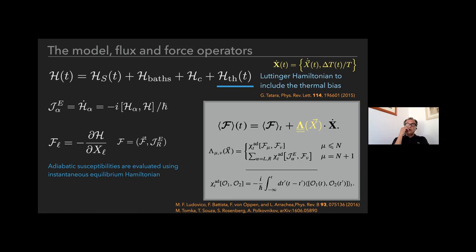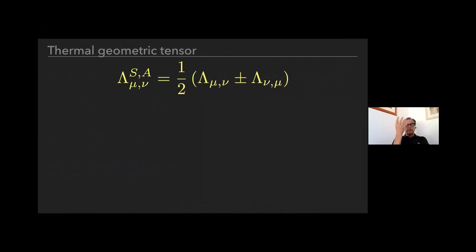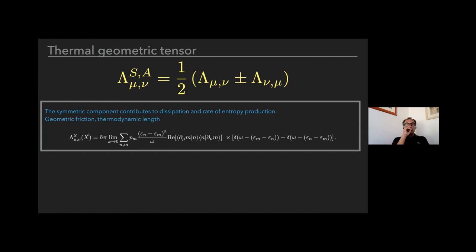By doing this adiabatic linear response, all the average values will have a zero-order term which is essentially just the average on the instantaneous state, plus there is a first-order correction in the derivative of the parameters that are changed.